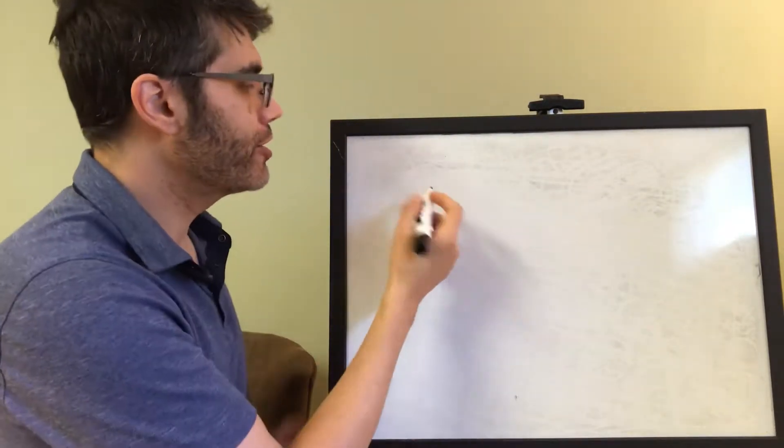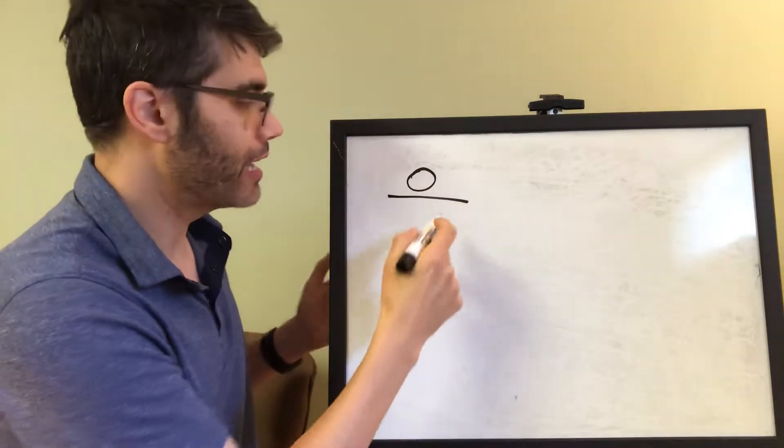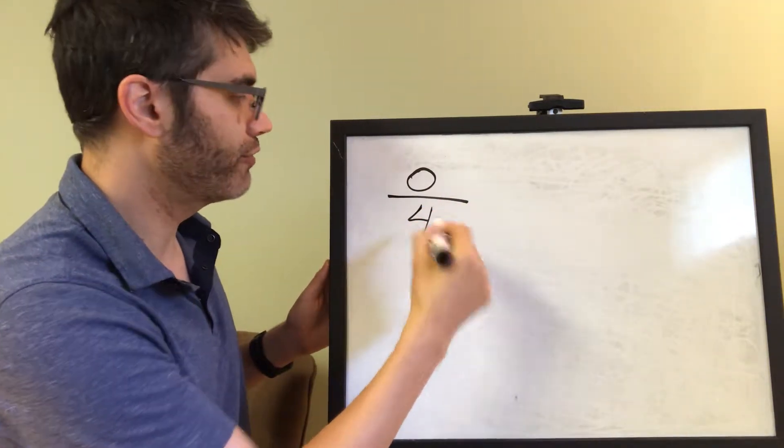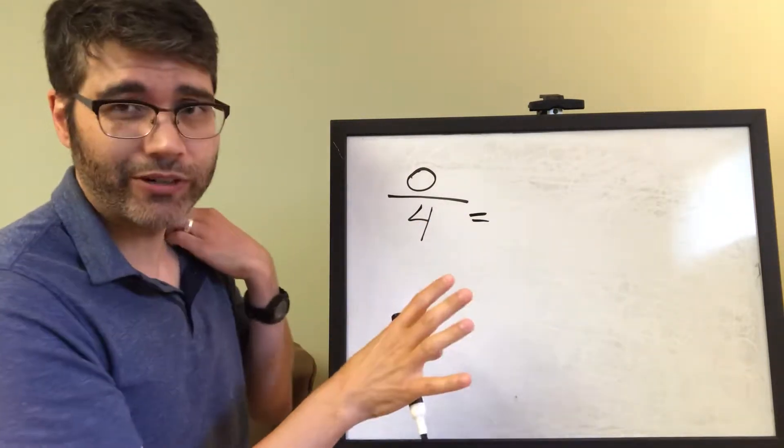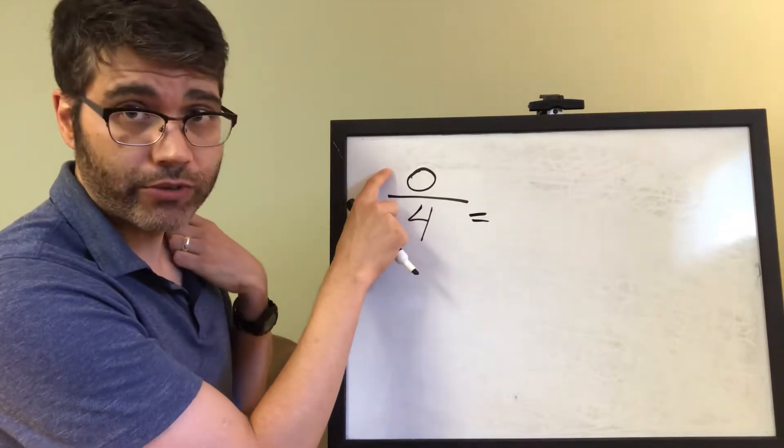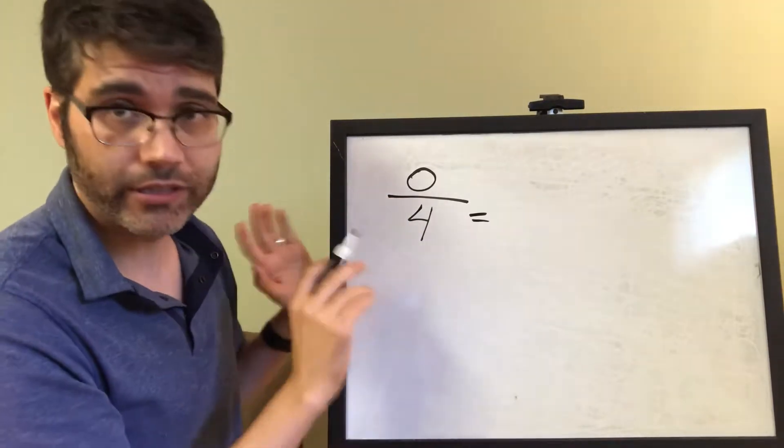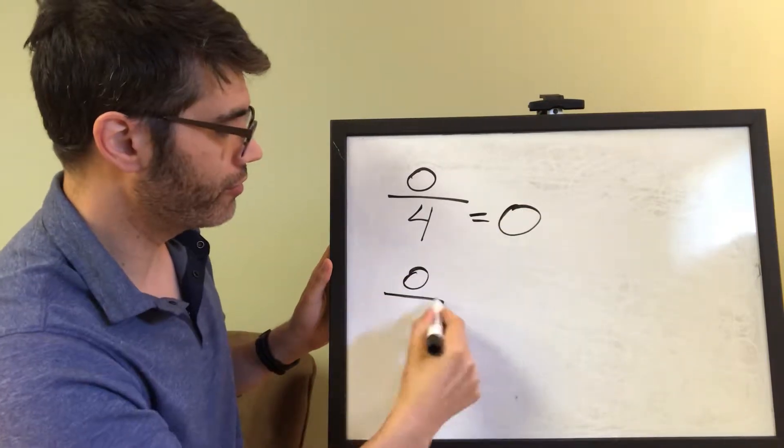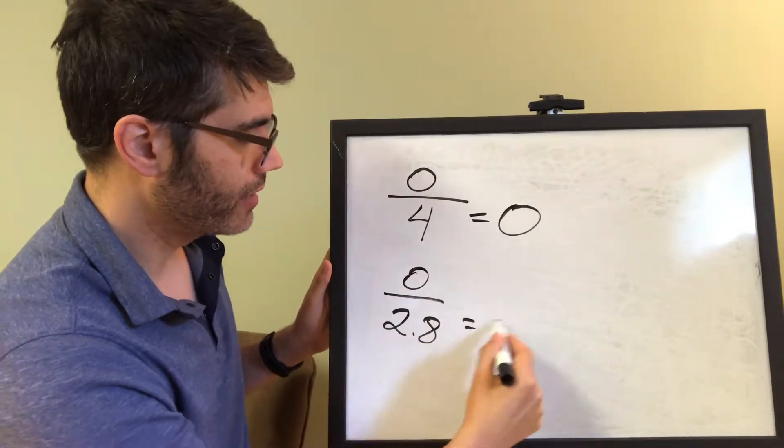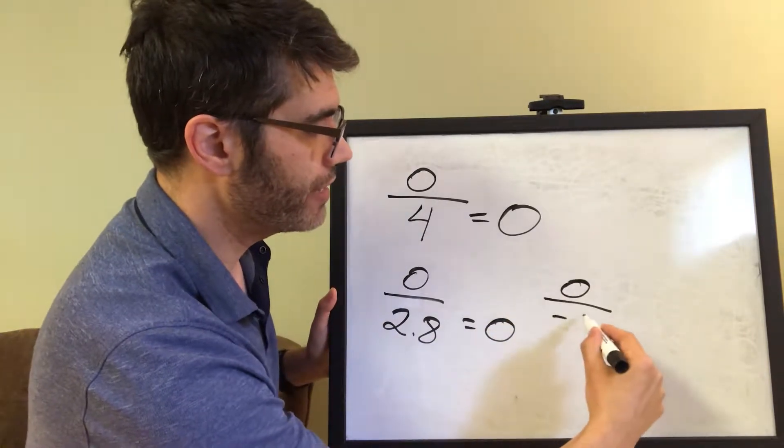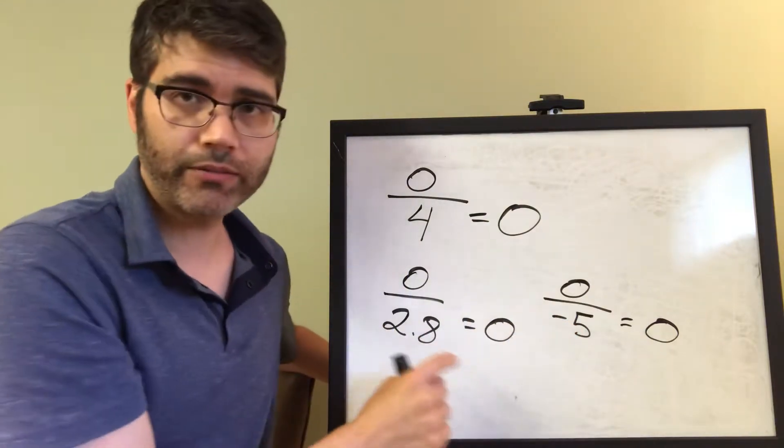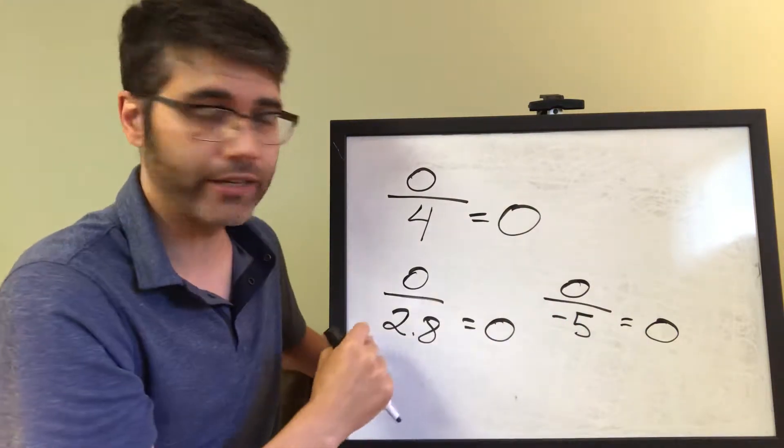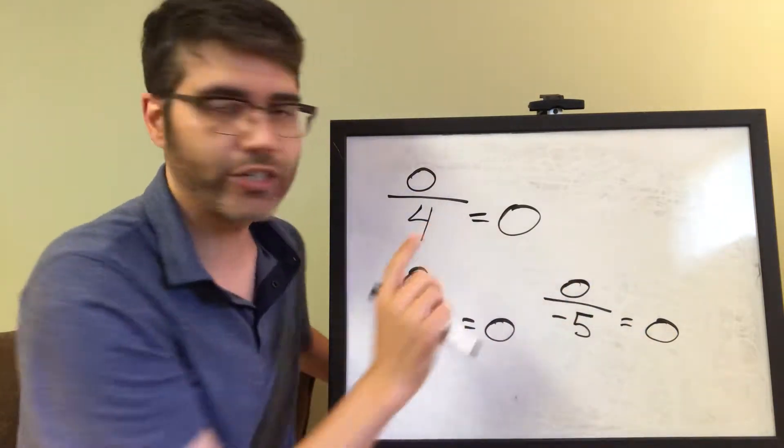Now, for the second weird kind of fraction is where you have 0 over something that's non-zero, like 0 over 4. Any number in the denominator except 0, if 0 is in the numerator, this entire thing will be 0. So 0 over 4 is 0, 0 over 2.8 is 0, 0 over negative 5 is 0. 0 over any non-zero number, doesn't matter what that non-zero number is in the denominator, as long as 0 is in the numerator, the entire fraction equals 0.